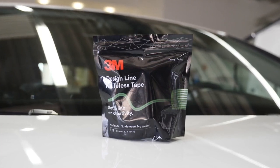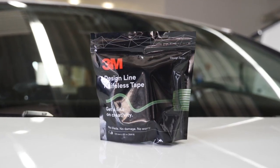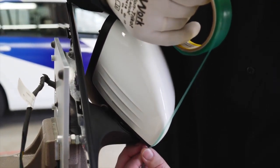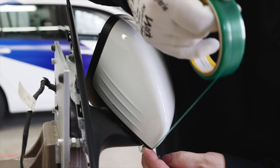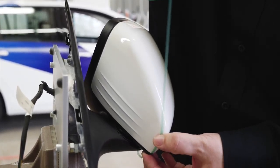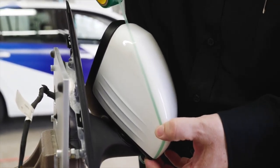After cleaning the mirror, use 3M Knifeless Tape Design Line to set the cut line for the first piece of film that is applied on the vertical undercut part of the mirror. Secure the knifeless tape to ensure good adhesion to the substrate.